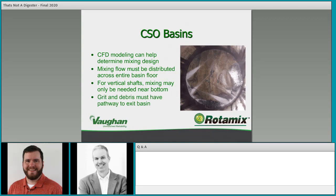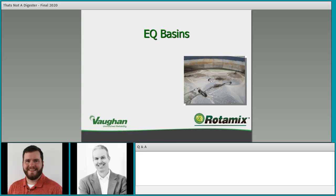Grit and debris must have a pathway to exit the basin. Even if you've got a large basin with debris spread across it, wherever your withdrawal point is needs to be a low point — an area where you can push the grit and debris so it actually has the ability to flow out. You need enough velocity as it's flowing out to keep it carrying through the system, or some ability to de-grit and screen so nothing stays in the CSO basin or in your piping.